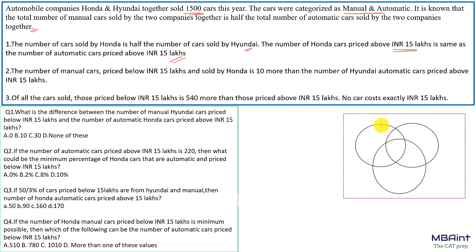For the Venn diagram, each circle represents one attribute. Let's take one circle as Honda, another as Automatic, and the third as Less than 15 lakhs. You can take either value from each attribute pair — these are just our chosen representatives.